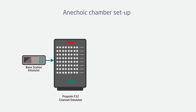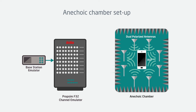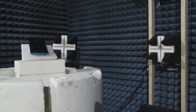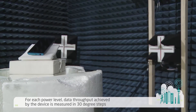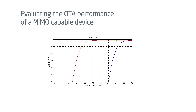Once the device is placed in the chamber, the test run is initiated. Signals are generated by the base station emulator, faded by the channel emulator, and then transmitted over the air to the MIMO device inside the chamber. For each power level, the data throughput achieved by the device is measured as the device is rotated in 30-degree steps. The average is then computed and the result is displayed. Typically, the measurement stops when the throughput has dropped below 70%.